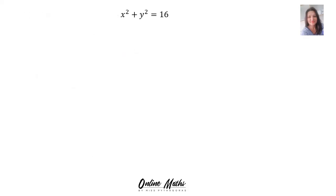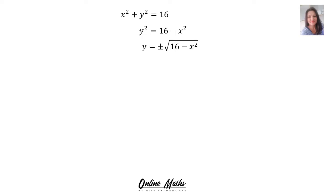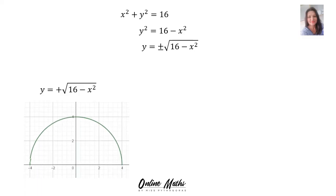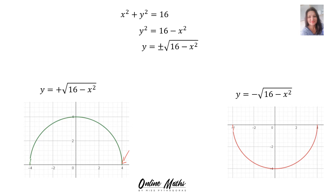I also want to show you that you can get half a circle. When given the equation x² + y² = 16, and making y the subject of the formula: y² = 16 − x², then taking the square root gives y = ±√(16 − x²). Taking the positive gives the upper half circle with radius 4, and taking y = −√(16 − x²) gives the lower half circle with radius 4.